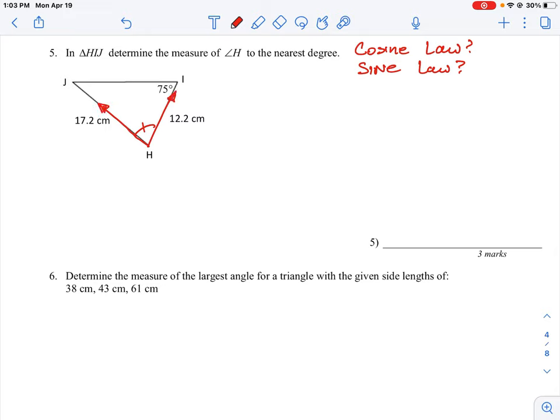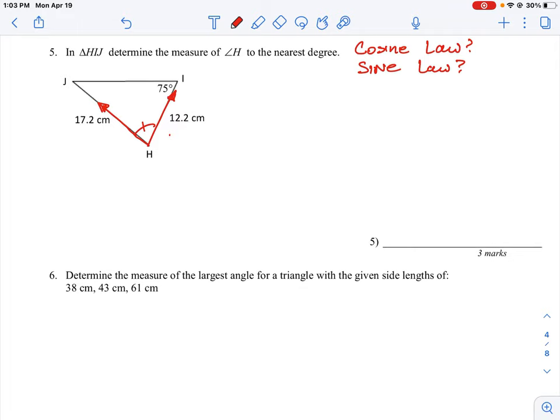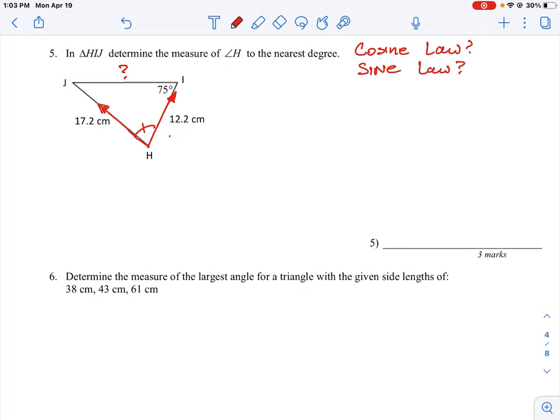So we do know the lengths coming off of point h. It's 12.2 and 17.2, but what we don't know is the measure of the length directly across from angle h.